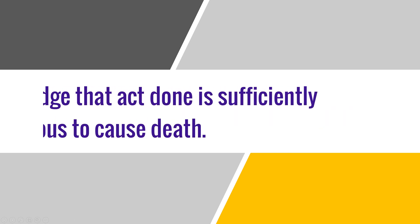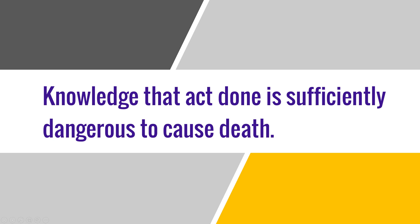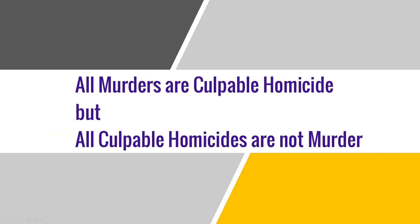The fourth ingredient is knowledge that the act done is sufficiently dangerous to cause death. Here the word 'sufficiently' is used, whereas in culpable homicide the word 'likely' is used. The act the offender is doing is much more — or sufficiently — dangerous, which will eventually cause death. So the major difference between murder and culpable homicide is the degree of intention and degree of probability of death, where 'sufficiently' versus 'likely' are used. A very important statement is: all murders are culpable homicide, but not all culpable homicides are murders.